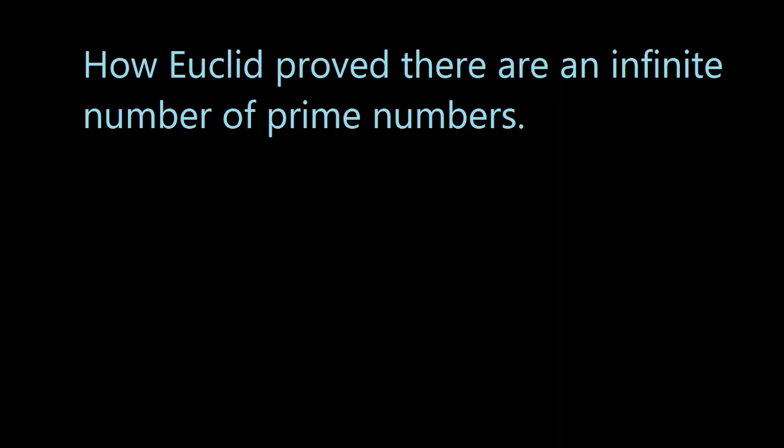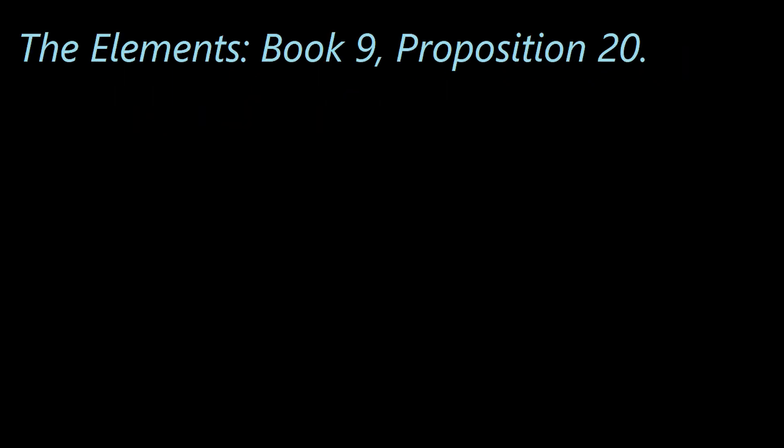Hello everyone. In my previous video I briefly mentioned that Euclid was able to prove that there were an infinite number of prime numbers using nothing but geometry. This video is to show you exactly how he did that. His proof is found in his book The Elements, Volume 9, Proposition 20. We'll go through it step by step with me using my Microsoft Paint skills to give some illustrations as well.